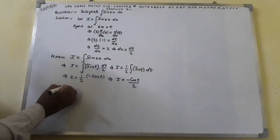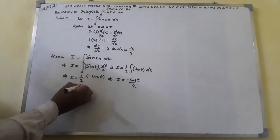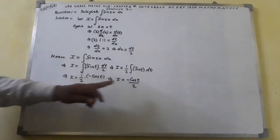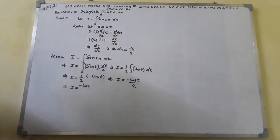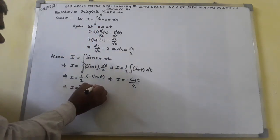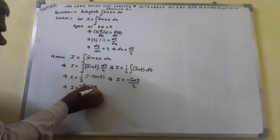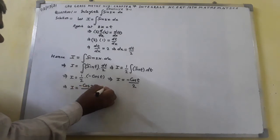Again, I is equal to minus cos, and in place of t I shall write 2x. So I equals −cos(2x) over 2, plus c.